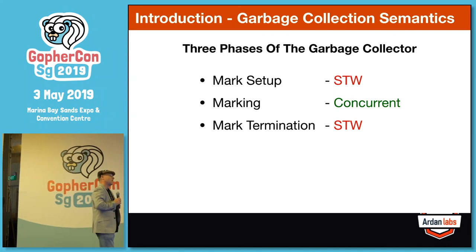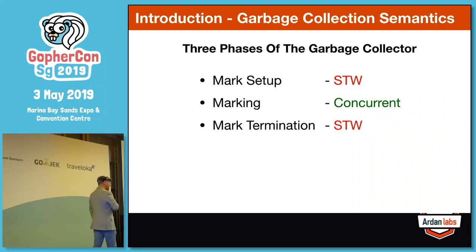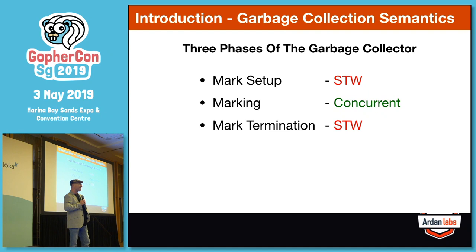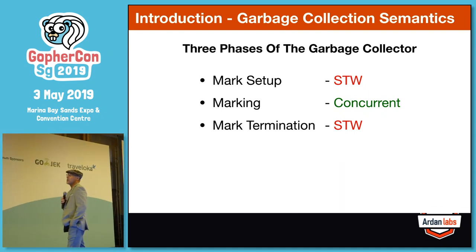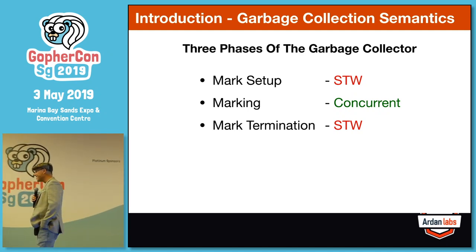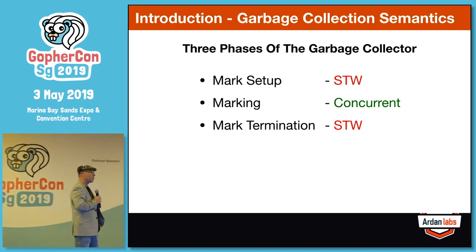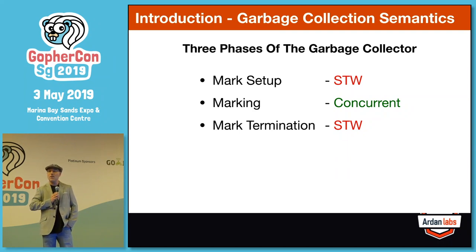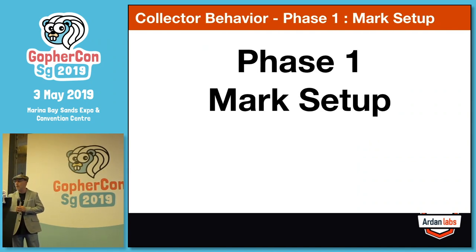Let's start with the different phases the garbage collector has to go through — there are three of them. First, there's mark setup, which is a stop-the-world moment for your app where application work is not getting done at all. Then there's the marking phase, which is concurrent — your app can work at the same time marking is going on. At the end there's another stop-the-world around mark termination. So there are two moments of stop-the-world at the beginning and end, and hopefully a lot of concurrent work in the middle.